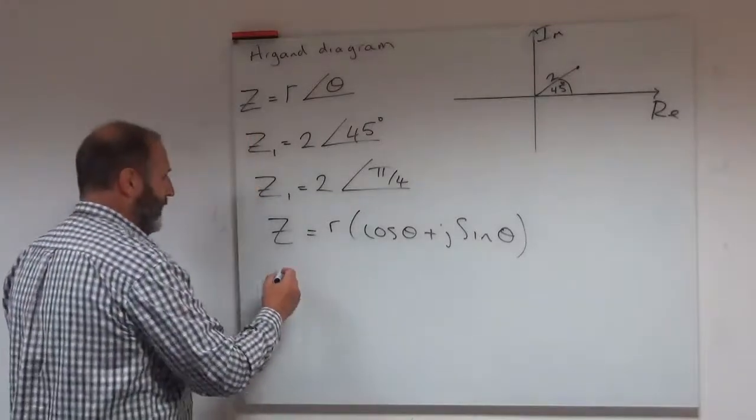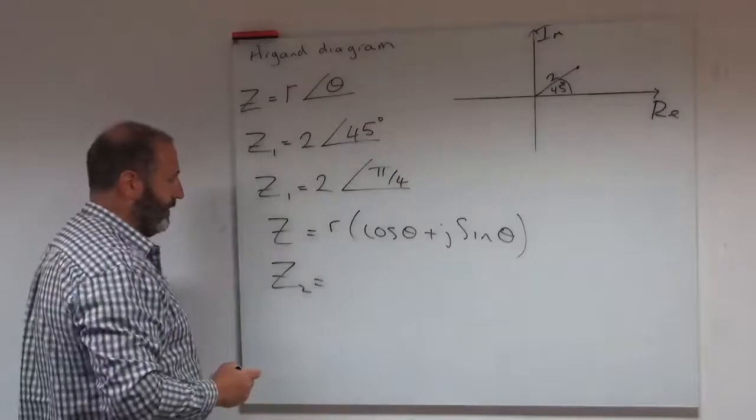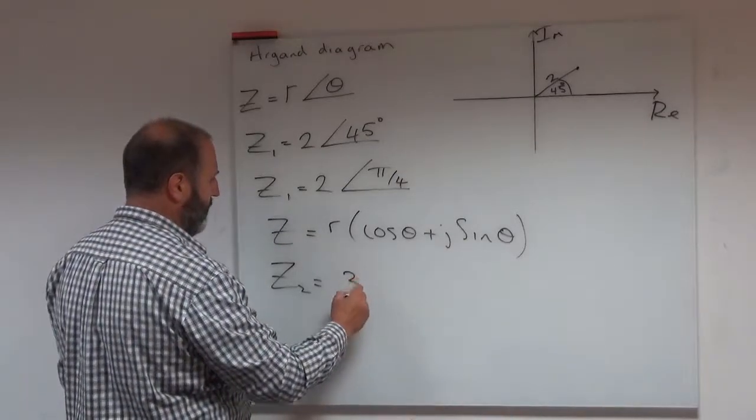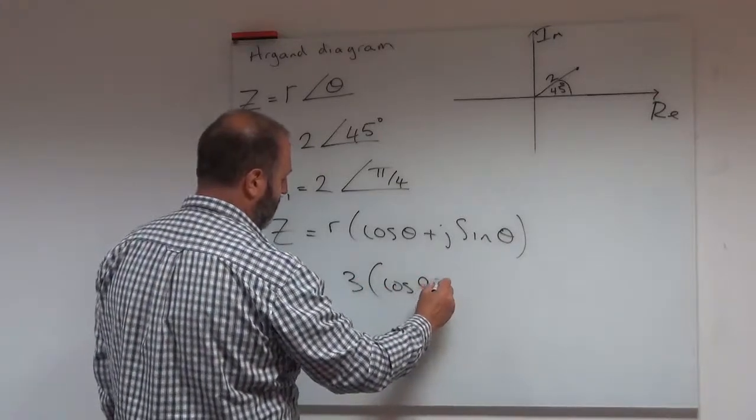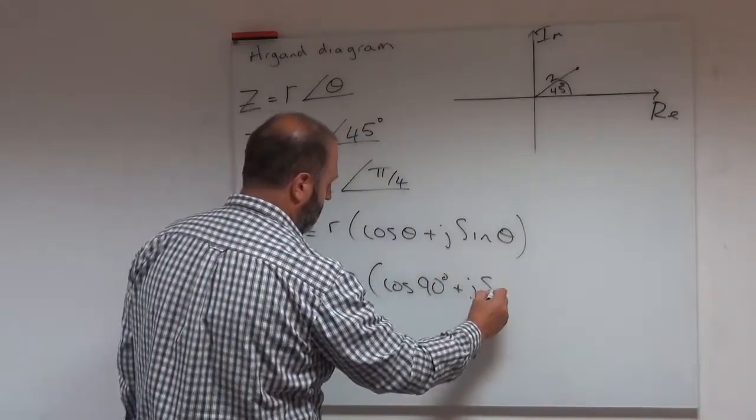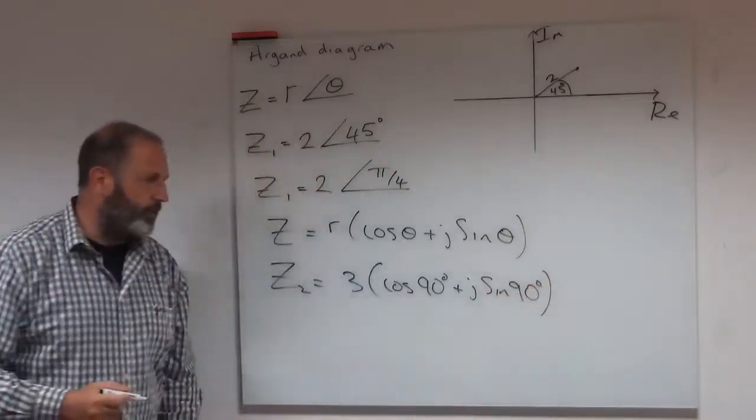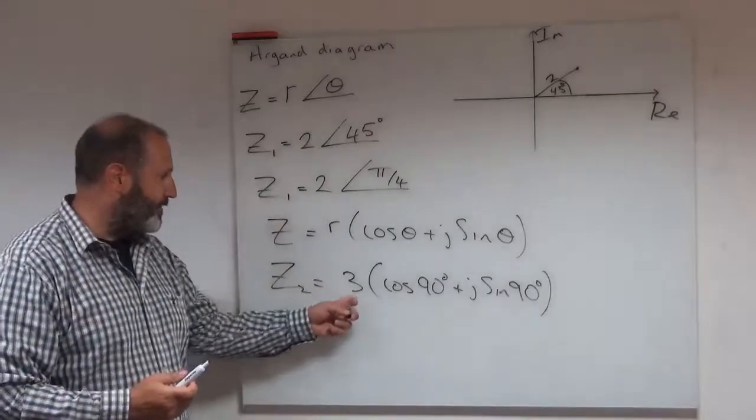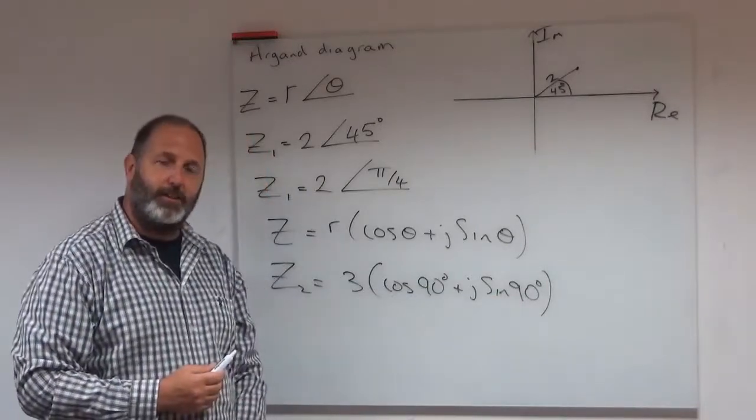So let's do one more example and plot it onto the Argand diagram. What about if we do something like this? So I'm going to say z2 is 3 and then cosine of 90 degrees plus j sine of 90 degrees.